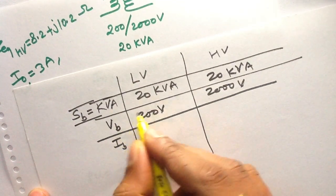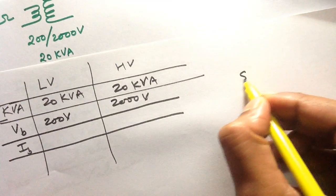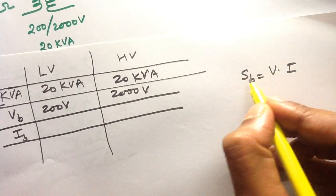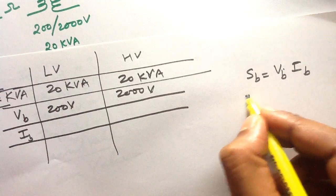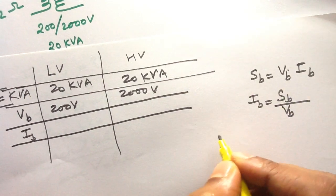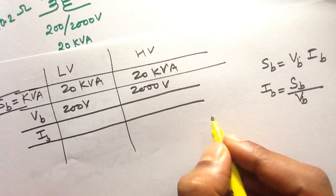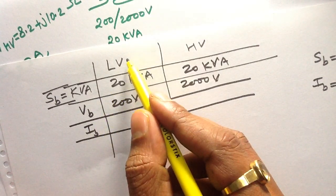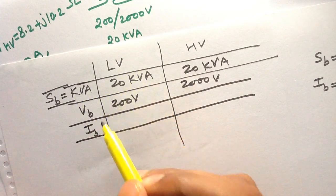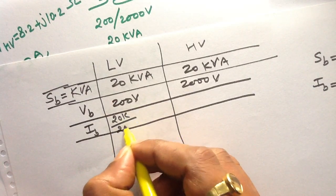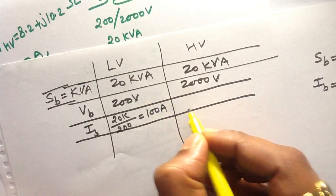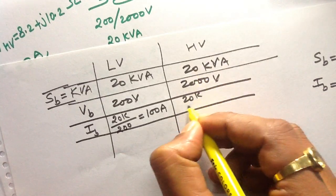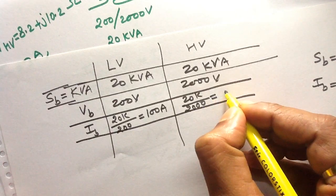The base current on LV side: you know that SB equals VB times IB, so IB equals SB divided by VB. For LV side, 20K divided by 200 gives 100 Ampere. In the same way, the base current of HV side: 20K divided by 2000 gives 10 Ampere.